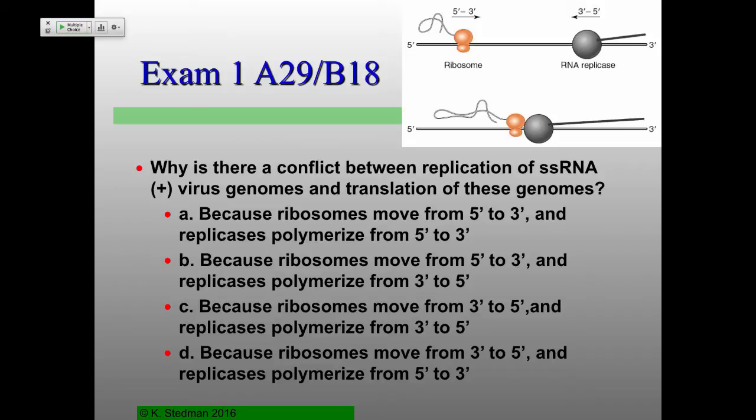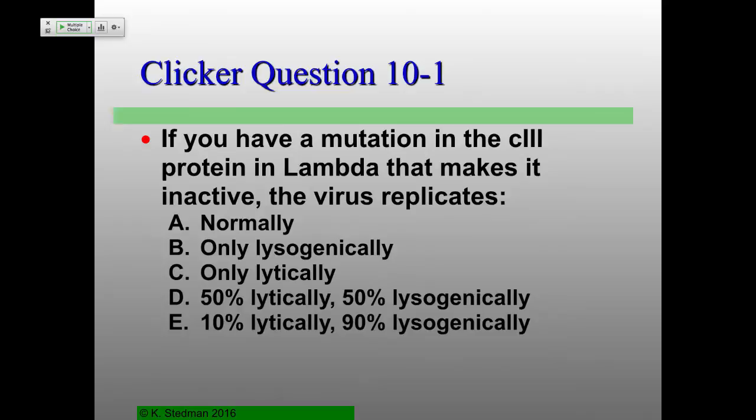Those are the only midterm questions I wanted to review. Now for clicker questions. If you have a mutation in the C3 protein in lambda that makes it inactive, what happens: the virus replicates normally, only lysogenically, only lytically, 50/50, or 10% lytic / 90% lysogenic? Feel free to discuss.